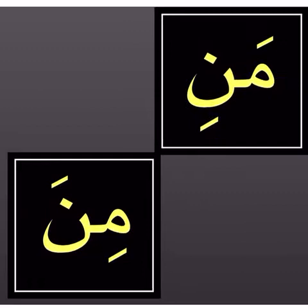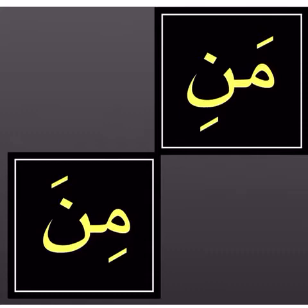Now we need to join them and read two letters together. The top block: meme with a fath — 'ma' — noon with a kasra — 'ni' — together: 'mani'. Remember, don't break up; don't say 'ma-ni' or drag it. It's a short i sound: 'mani'. The bottom block: meme with a kasra — 'mi' — noon with a fath — 'na' — together: 'mina'. One more time: top — 'mani', bottom — 'mina'.